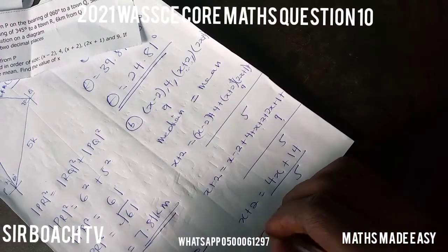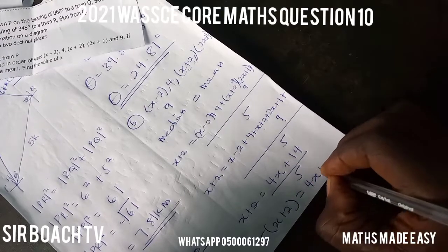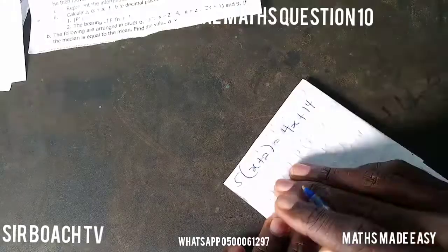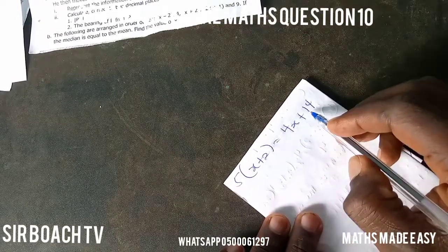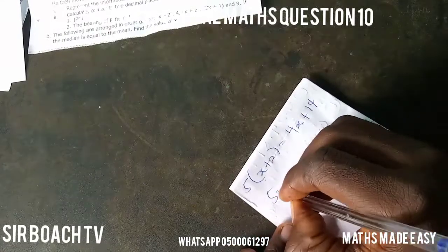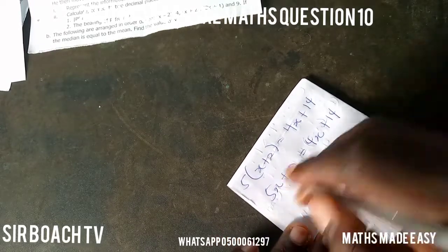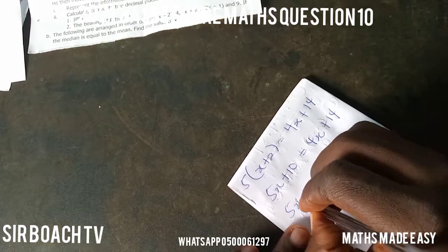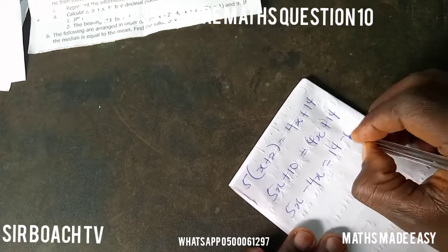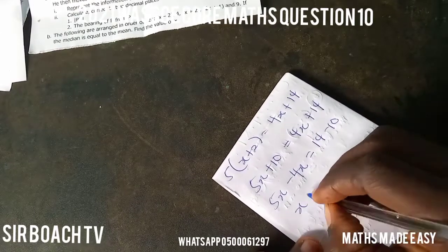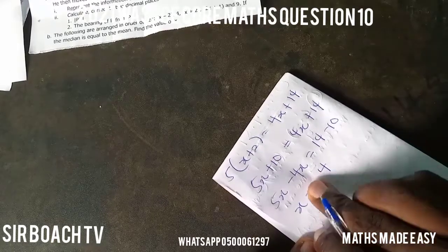We cross-multiply to get 5(x plus 2) equals 4x plus 14. Opening the bracket gives 5x plus 10 equals 4x plus 14. Grouping like terms: 5x minus 4x equals 14 minus 10, so x equals 4. The value of x is 4.